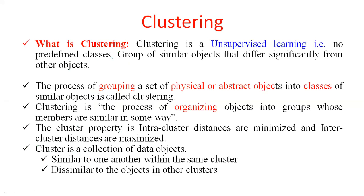What is clustering exactly? Clustering is unsupervised learning. In unsupervised learning, there are no predefined classes. For classification, predefined classes are there, but here there are no predefined classes. Here we group similar objects together. The process of grouping a set of physical objects into classes of similar objects is called a cluster.